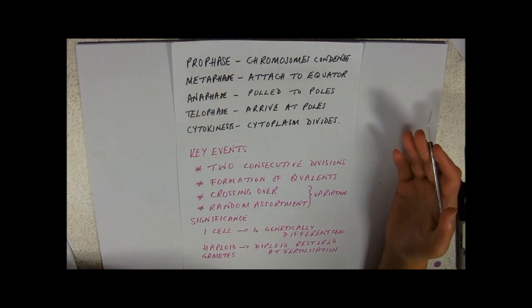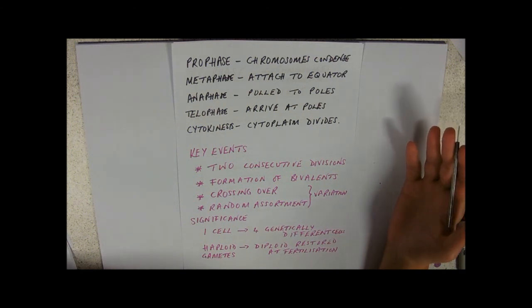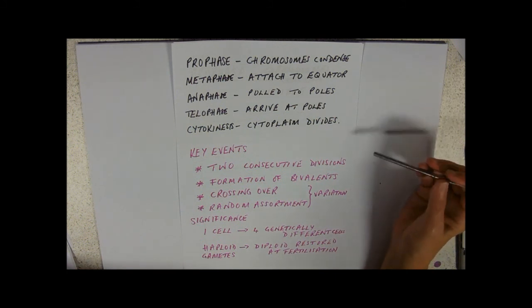Bearing in mind that you get one of your homologous of each pair from your mum, one from your dad. They have different genes, so we're now sort of muddling up, shuffling, if you like, your mum and your dad's genes on each homologous chromosome, so that you'll get a mixture of maternal and paternal genes.